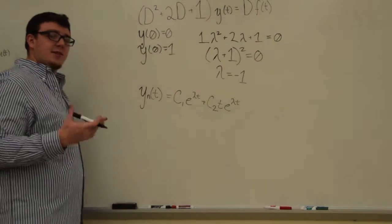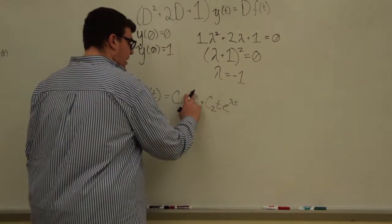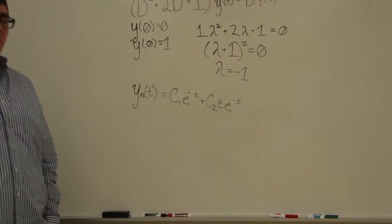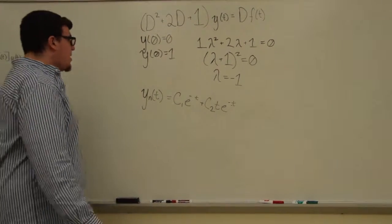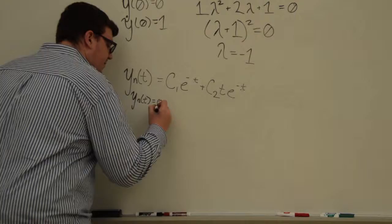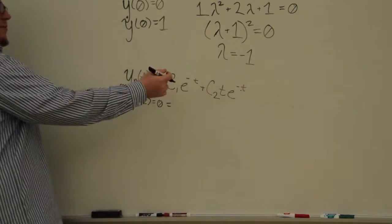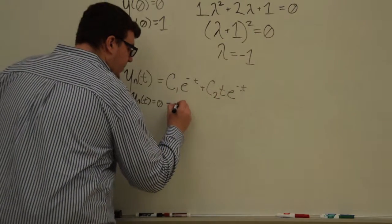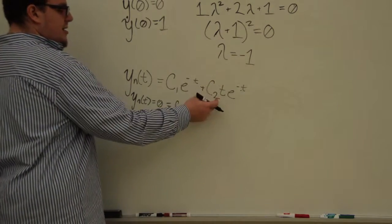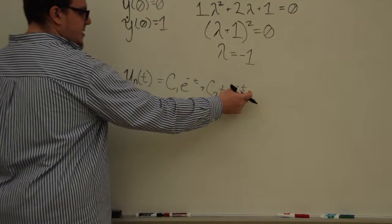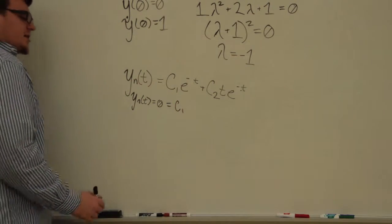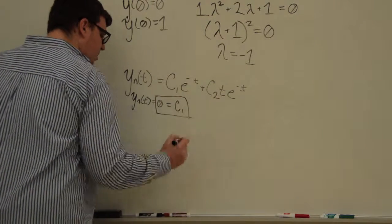These two coefficients can be different so we have to solve for them individually. Plugging in lambda equals negative 1 to make it easier: to solve for the coefficients we use our initial conditions. Our first initial condition is that yn of 0 equals 0. Plugging 0 in for every t on the right side, we get c1 times e to the 0, which is 1, plus c2 times 0 times e to the 0 — that whole term drops off. So we end up with c1 equals 0.